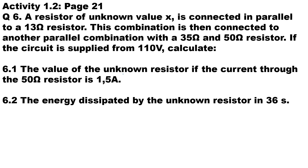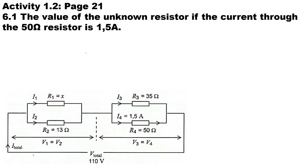In this series-parallel combination, a resistor of unknown value X is connected in parallel to a 13 ohm resistor. This combination is then connected to another parallel combination with a 35 ohm and 50 ohm resistor. The circuit is supplied with 110 volts, and I've gone ahead and drawn the diagram.